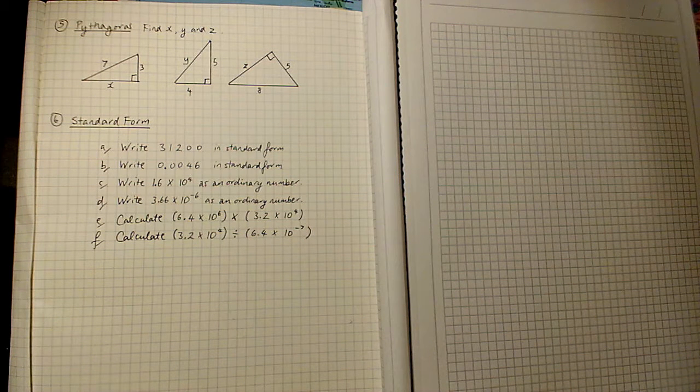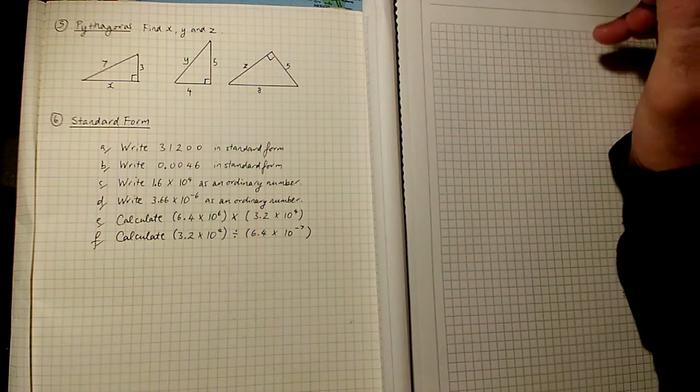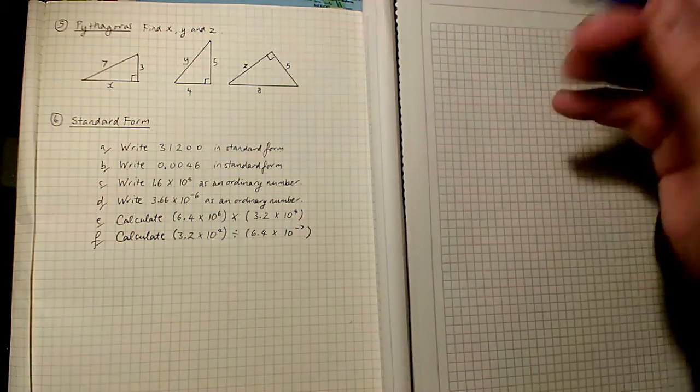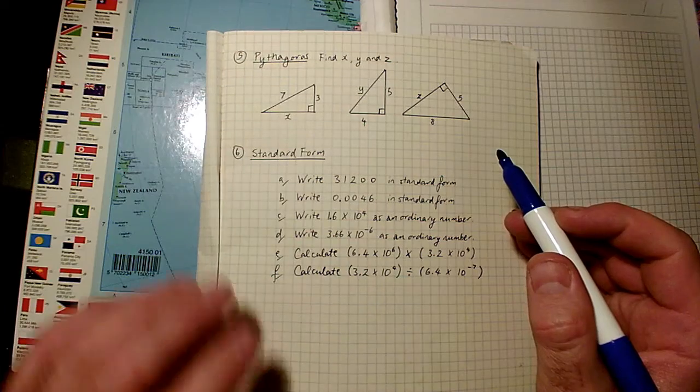Just looking at my MYP4 diagnostic test, question 5, all about Pythagoras. We have got three triangles, find the missing sides.